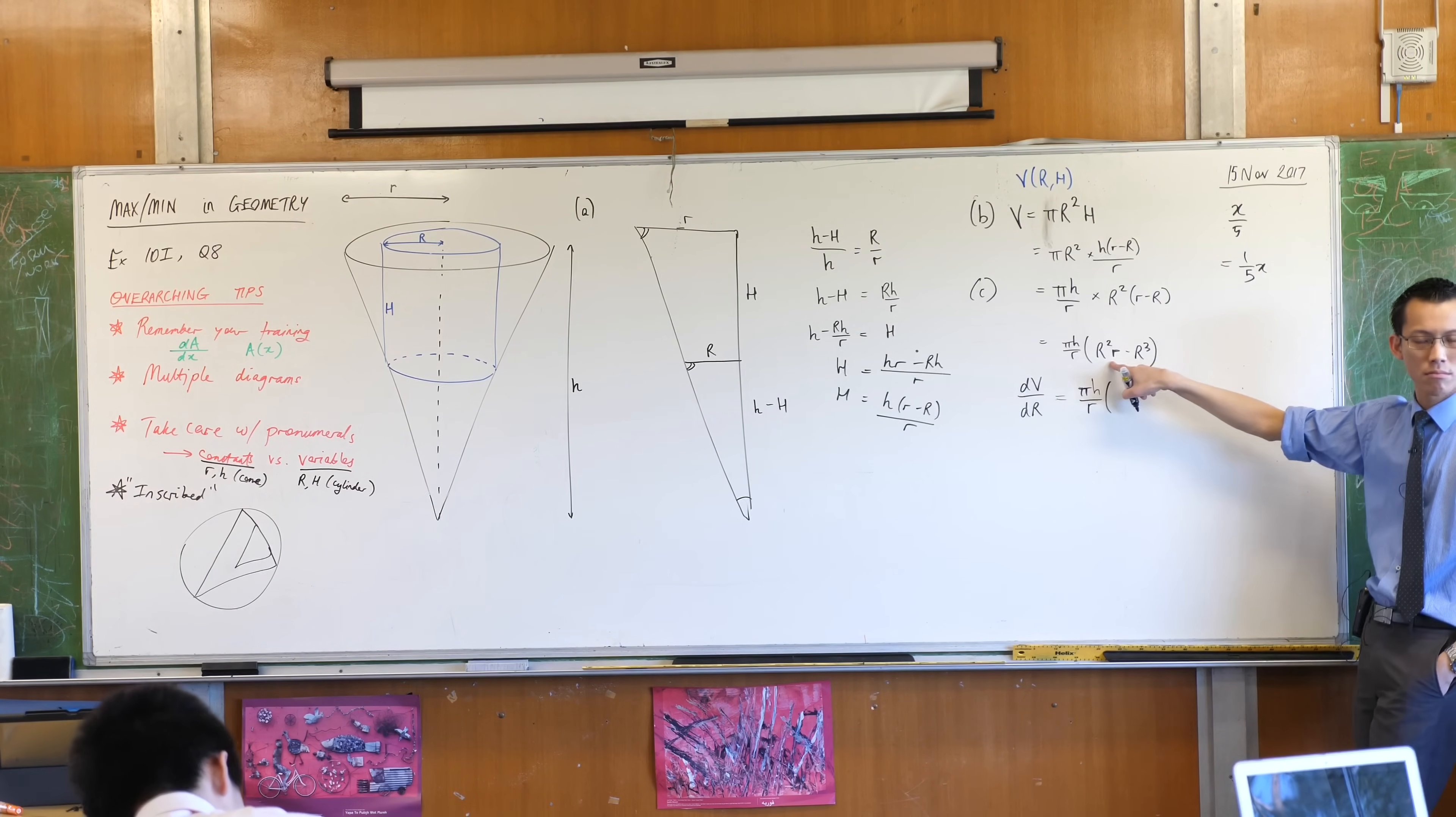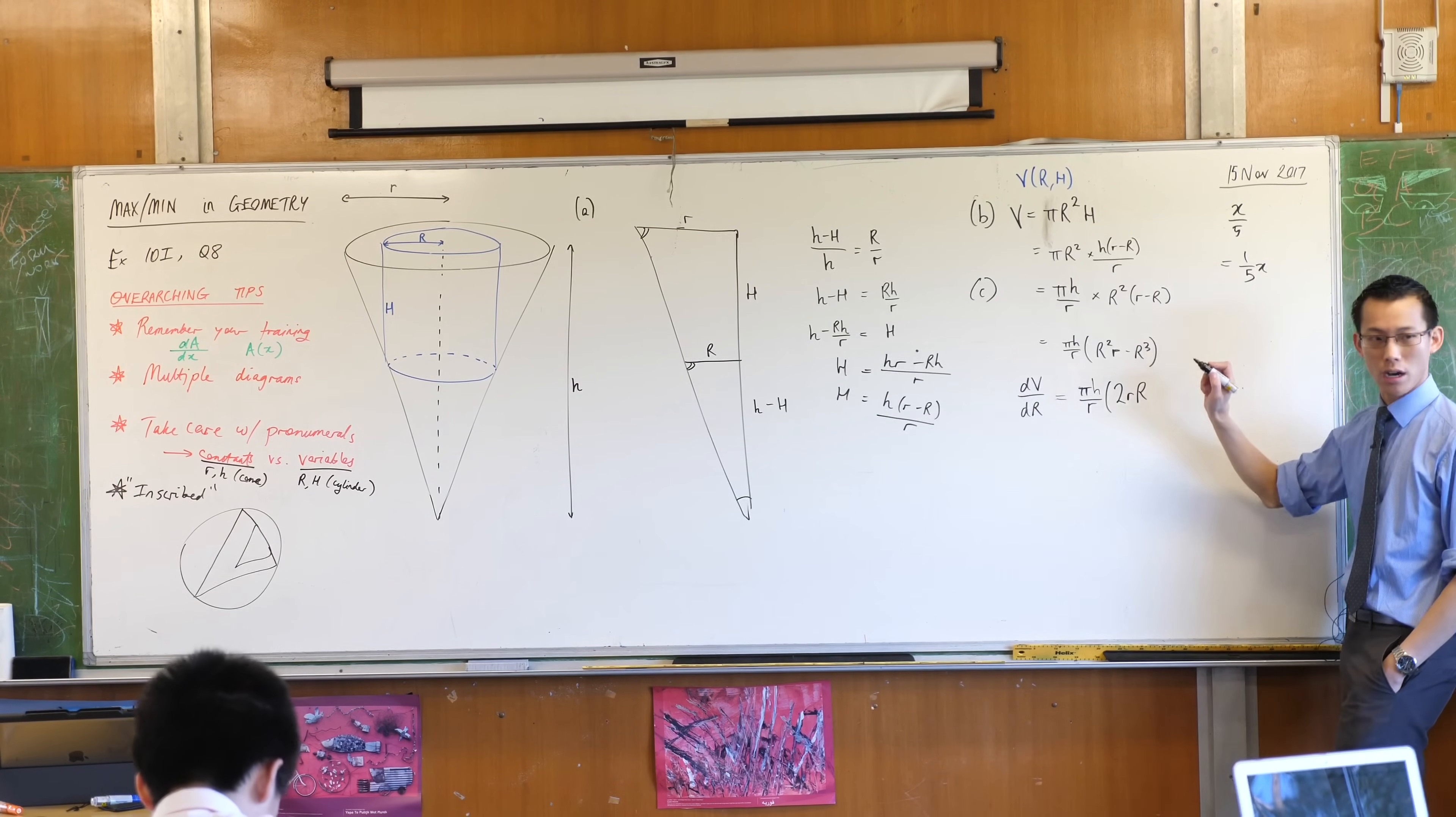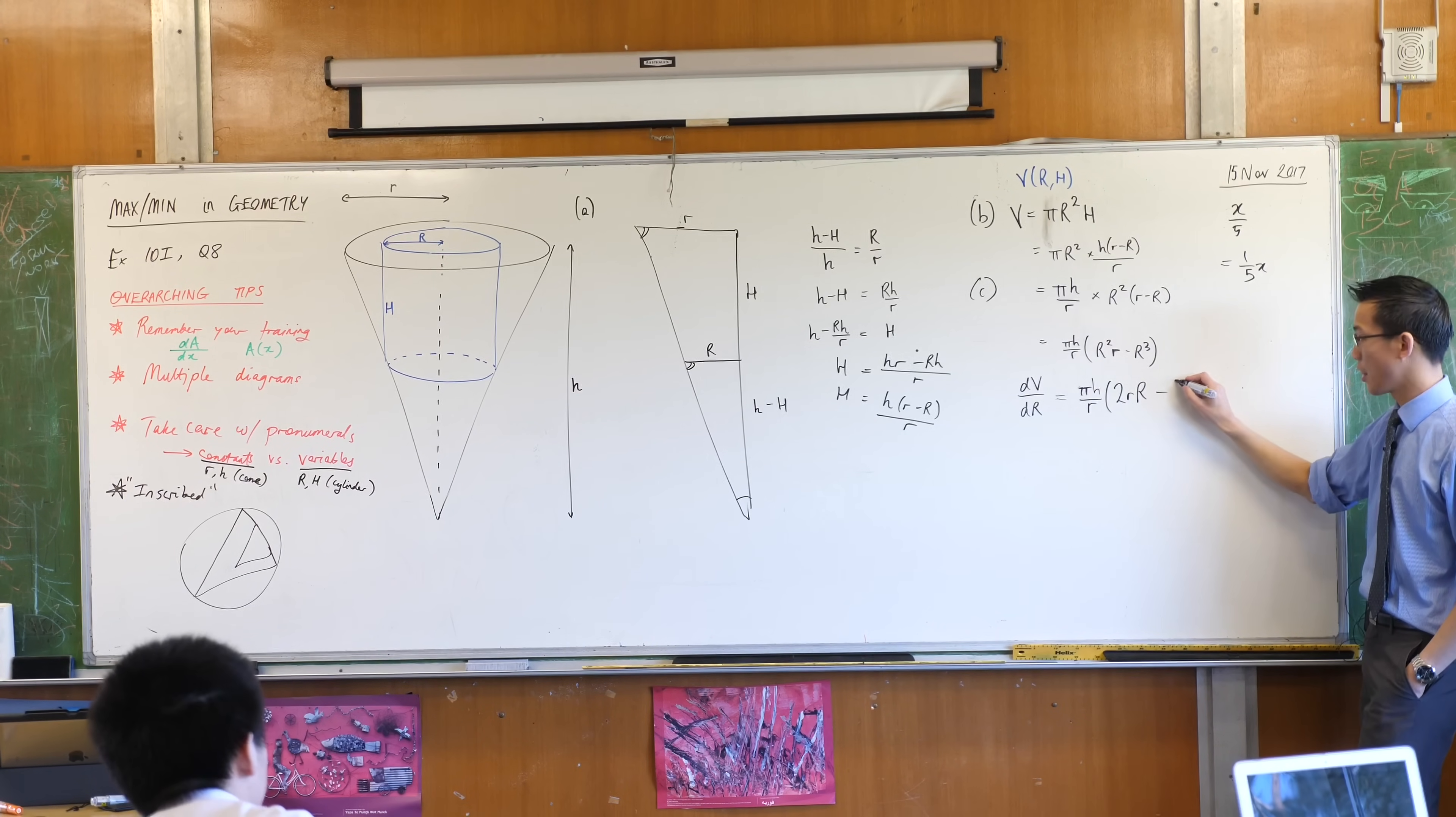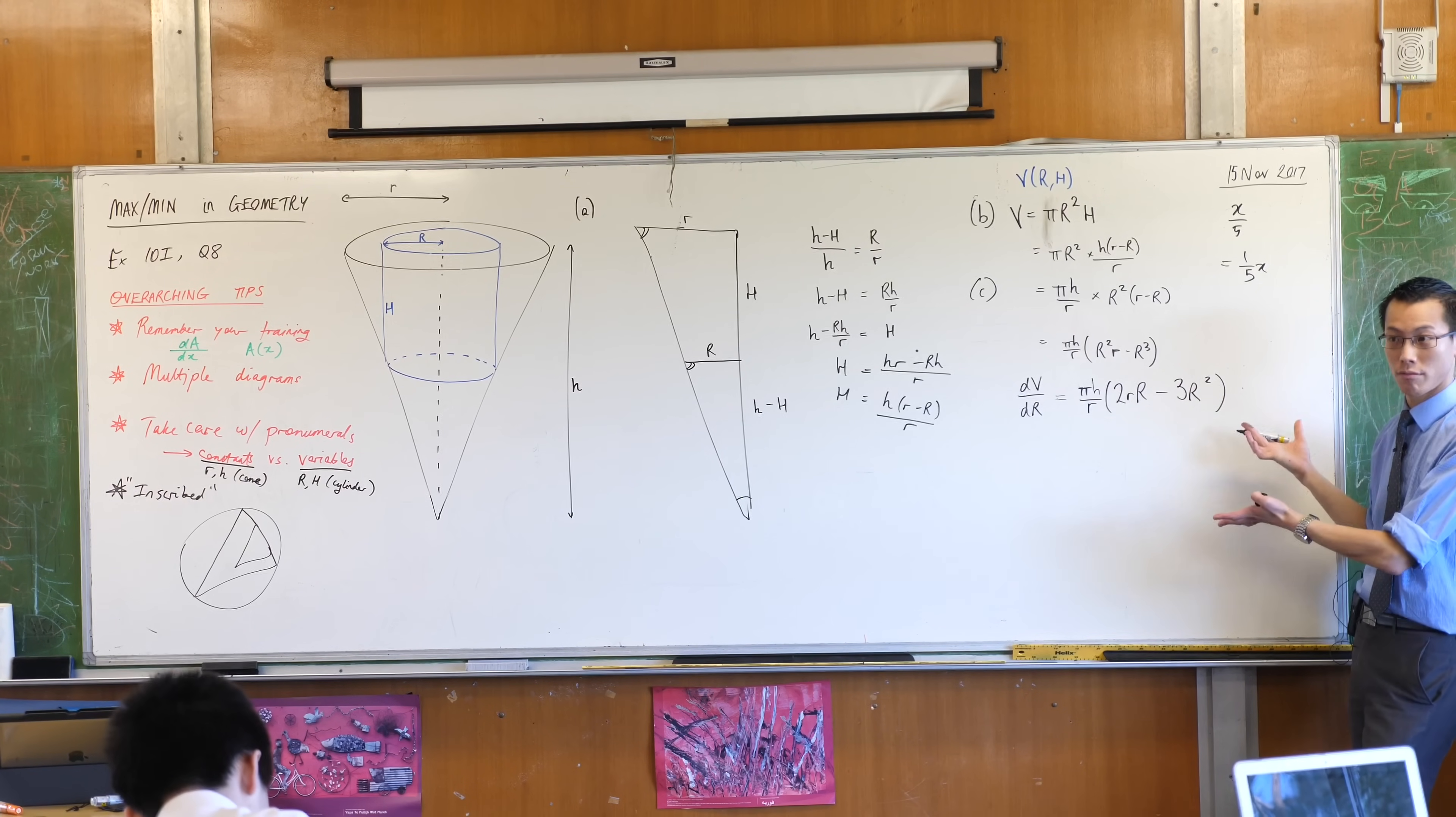What's the derivative of this? Two little r, capital R. Yeah? Because remember, that guy's just a constant. What about this? What's that become? Three, capital R, squared. Derivative. Done.